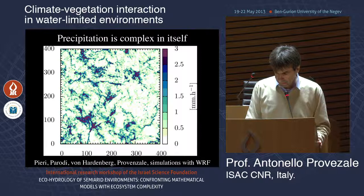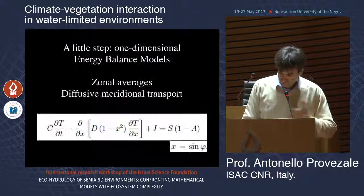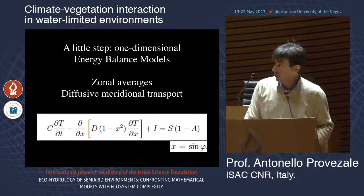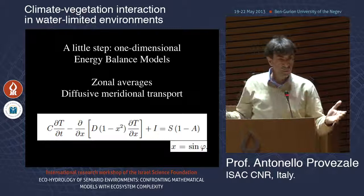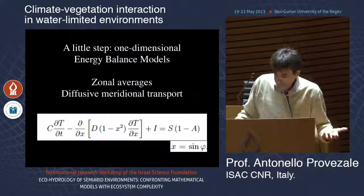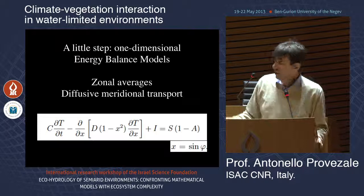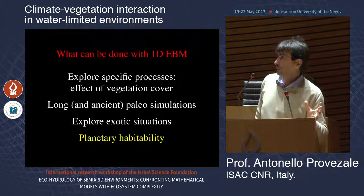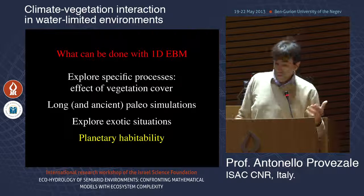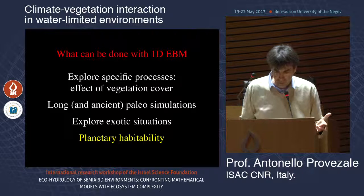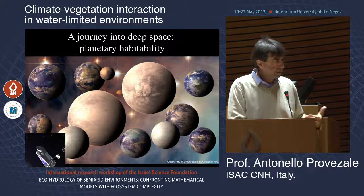Going further, you can expand this model to 1D so the planet has latitudinal dependence. This is the old story of Budyko and Sellers — 1D energy balance models. You can explore specific processes, such as lateral expansion of vegetation, and do long paleoclimatic simulations. What we are doing goes even deeper into 'deep space': planetary habitability.